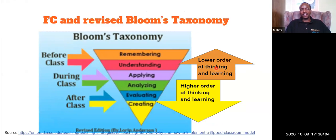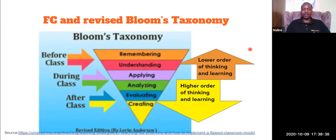I think you have learned about Bloom's taxonomy. Flipped Classroom relates well with what we call the revised Bloom's taxonomy. In this revised version, the triangle is pointing down, whereas the original Bloom's taxonomy triangle is pointing up. Let us look at the triangle — we have what Bloom called the levels of learning. Starting at the top is the lowest level of learning, and at the bottom is the highest level.